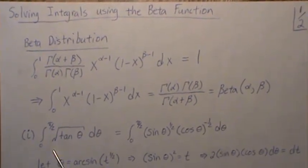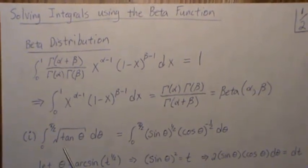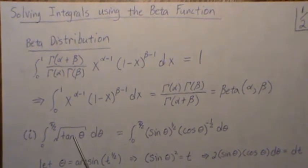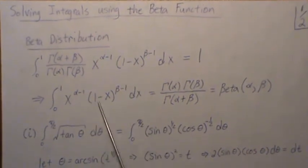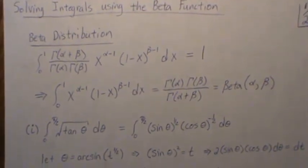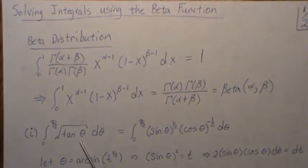Okay, so now let's look at this integral: the integral from 0 to π/2 of square root of tangent of θ. Now when you first see this, you think how in the world can we make it look like one of these? Well remember, tangent is sine over cosine, so this becomes this.